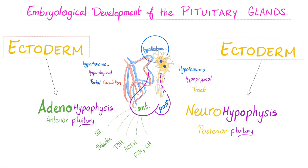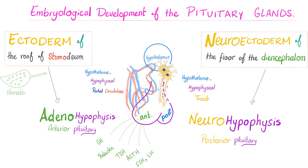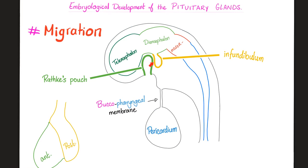Where did the pituitary glands come from? Both came from the ectoderm, but different kinds of ectoderm. The adenohypophysis came from the ectoderm of the roof of the stomodium — which is basically your mouth. However, the neurohypophysis came from the neuroectoderm of the floor of the diencephalon in your brain. So the anterior pituitary starts at the roof of your mouth and migrates upwards, while the neurohypophysis starts in the diencephalon and migrates downwards.